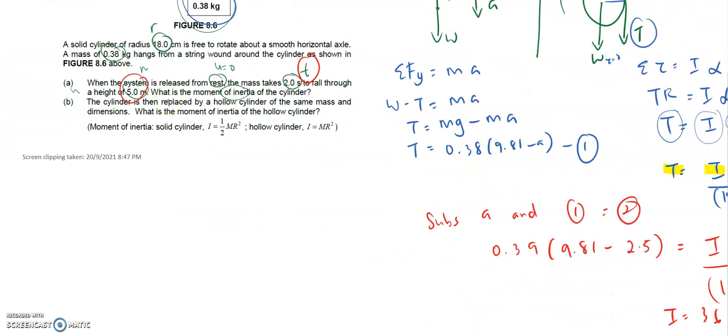Question number B. If you look at question number B, what they ask you: if the cylinder is then replaced by a hollow cylinder of the same mass and dimension, what is the moment of inertia of the hollow?